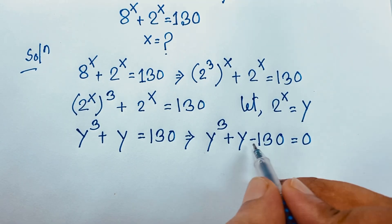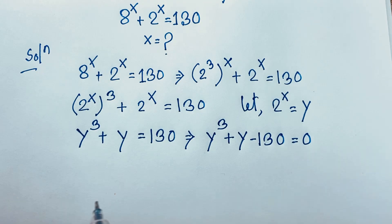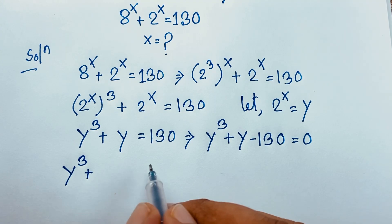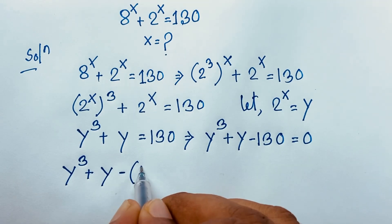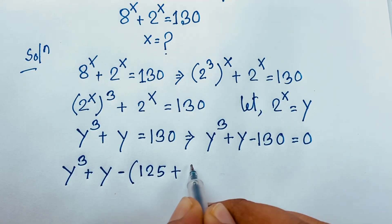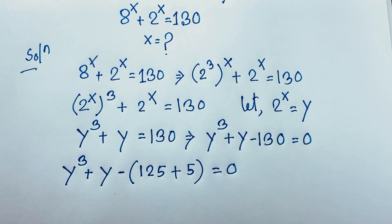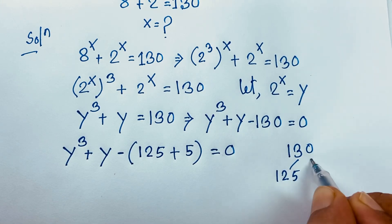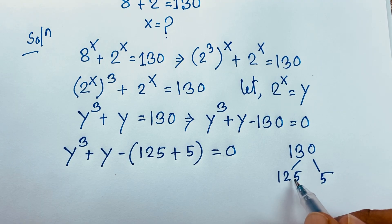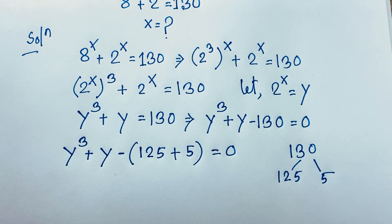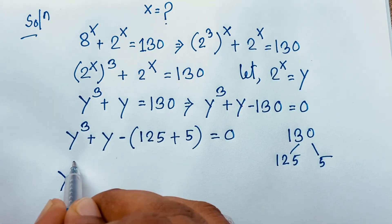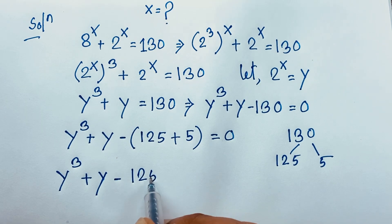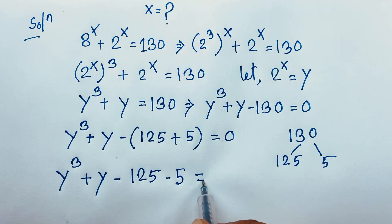Now if I move 130 to the other side it becomes negative, giving us y to the power 3 plus y minus 130 is equal to 0. We have a cubic equation. Using the easy method, we split 130 into 125 plus 5, because 125 equals 5 to the power 3.